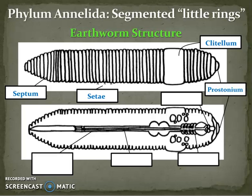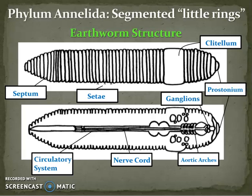On the inside, closest to the top of our worm, we have the ganglions, or the nerve centers. We have what are called aortic arches, and they work together like hearts to pump blood through the worm. We have a nerve cord - a nervous system that runs from the ganglions all the way down our earthworm. And we have our circulatory system with all of these blood vessels.